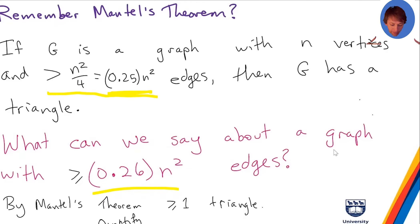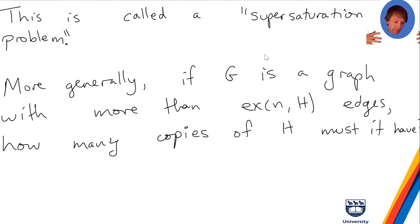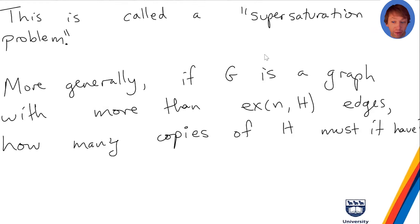Supersaturation means the graph G is more than saturated. If you go past the point where you have to have triangles, the question becomes how many triangles must you have. More generally, in a supersaturation problem for graphs, G is a graph with more than the extremal number of edges for H — EX(n, H) — and you want to say how many copies of H must it have. Here we're just dealing with the case H is K3.